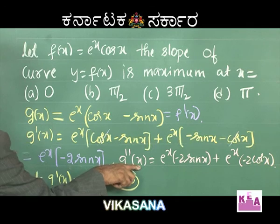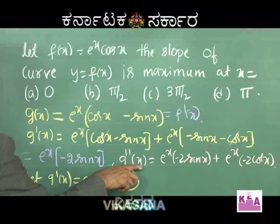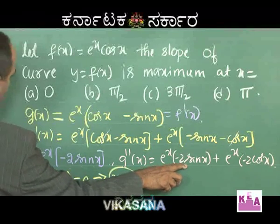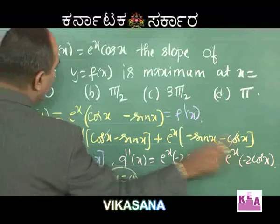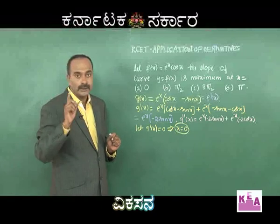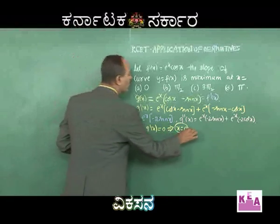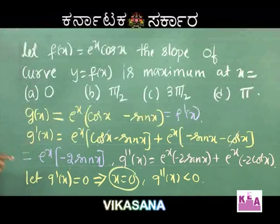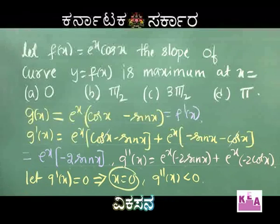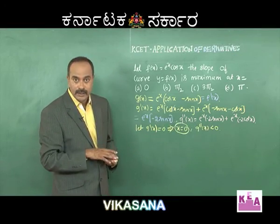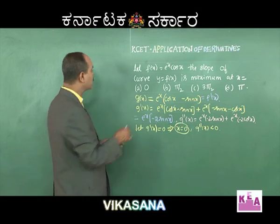Substituting x = 0 in g''(x): g''(0) = eˣ(−2 sin 0) + eˣ(−2 cos 0) = e⁰(0) + e⁰(−2) = −2. Since g''(x) is negative, there exists a maxima when g'(x) = 0. We got x = 0, so option A is correct.